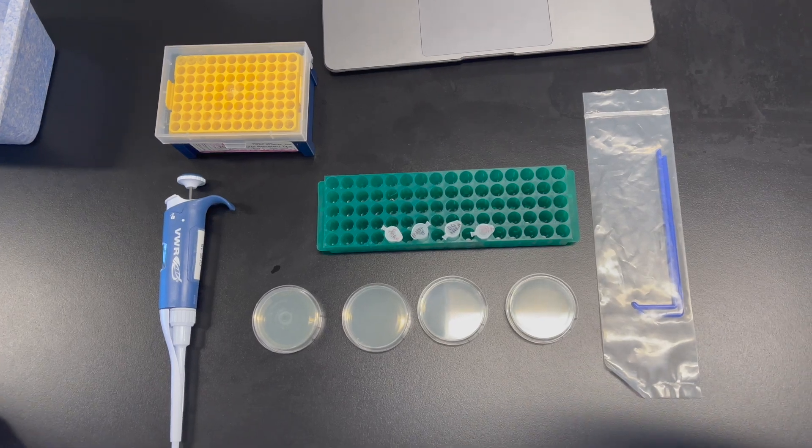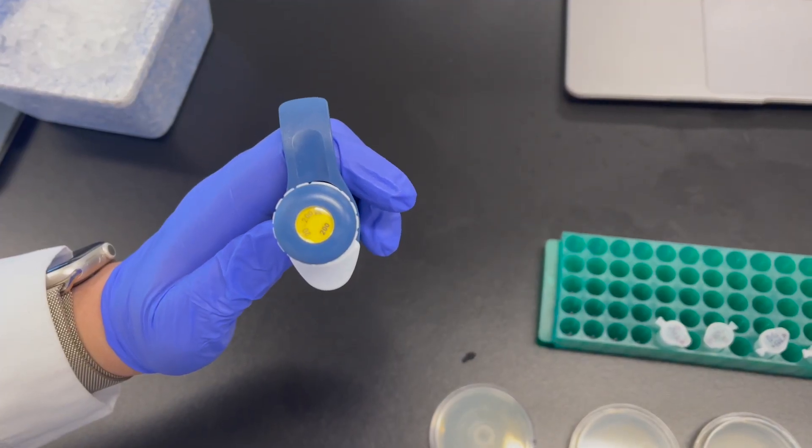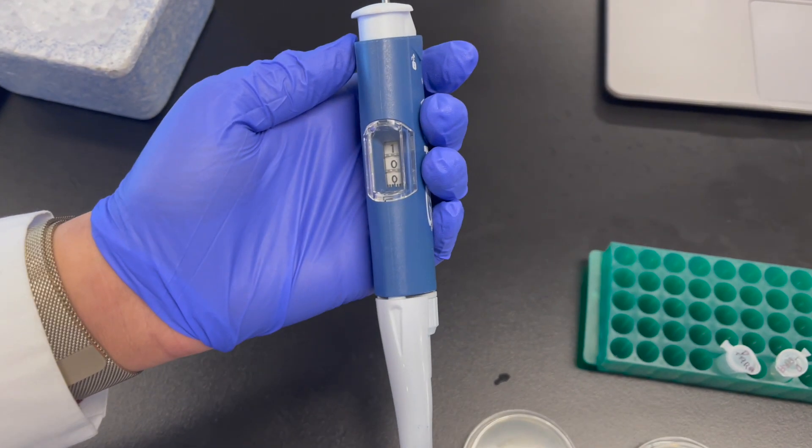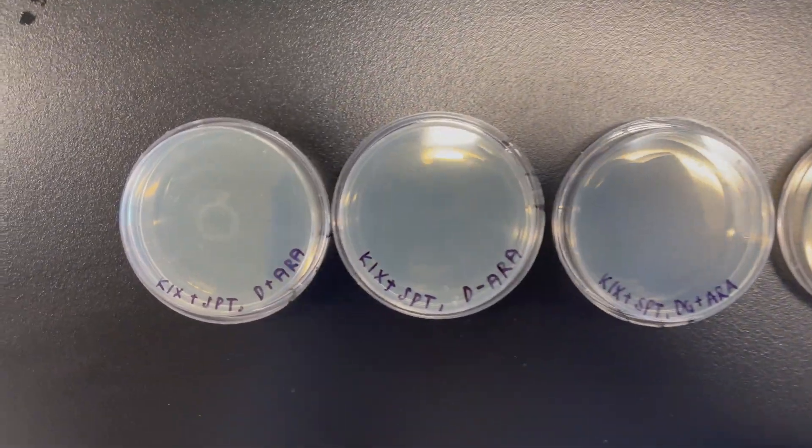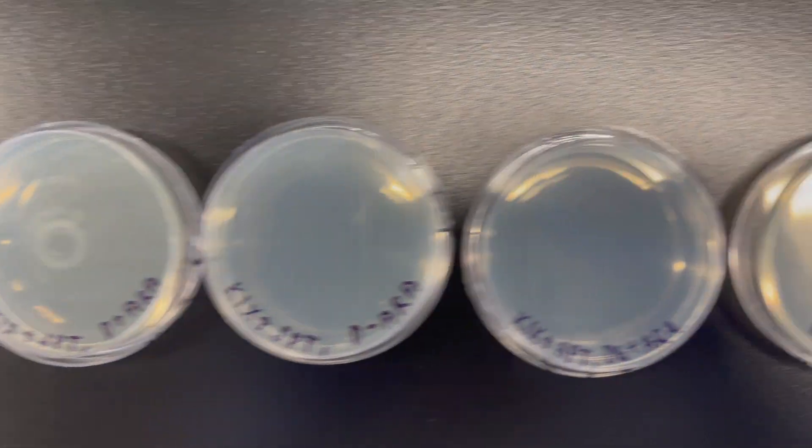20 minutes later. Next we'll be naming the plates. So grab the P200 micropipette, set it to 100 microliters, and then take four plates and using a sharpie label each one of the plates as follows.